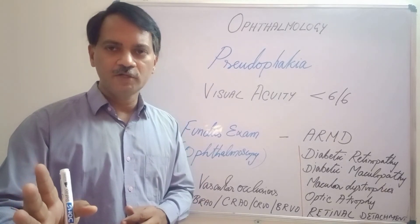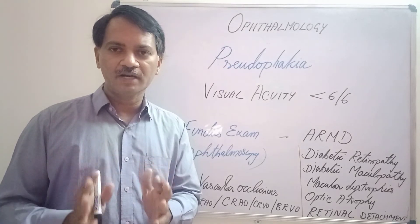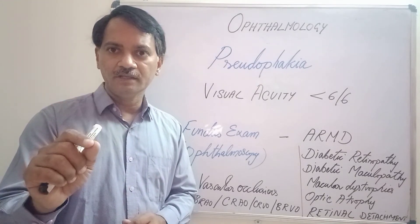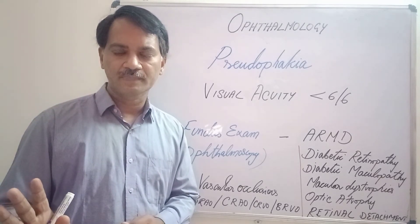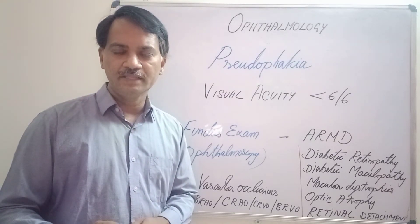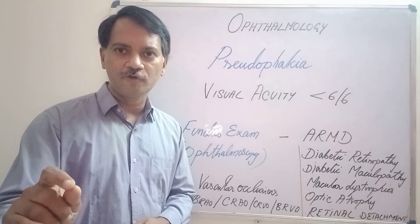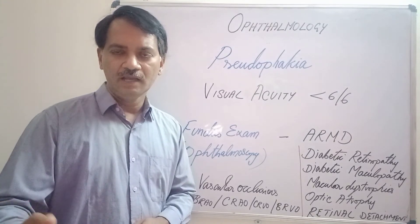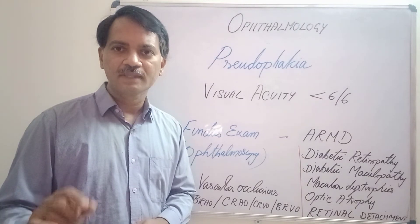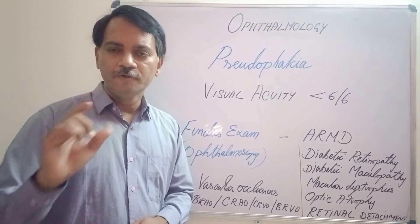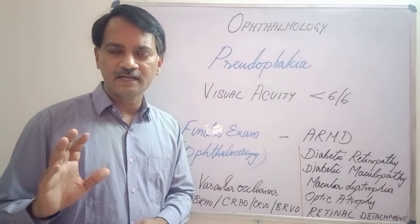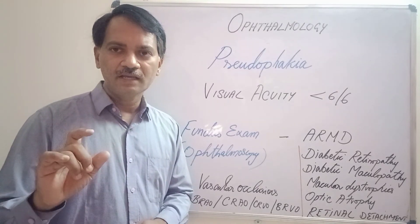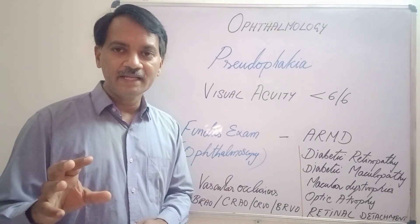To summarize: for any pseudophakic patient, it is our duty to check whether the distance visual acuity is 6/6 or not. If it is 6/6, we check whether near vision correction is needed. If the patient has a multifocal IOL, near vision spectacles may not be needed. If only a unifocal IOL is present, reading spectacles are required. Beyond this, we must complete examination with slit lamp to rule out other eye problems, and examine the fundus to rule out peripheral retinal pathologies.